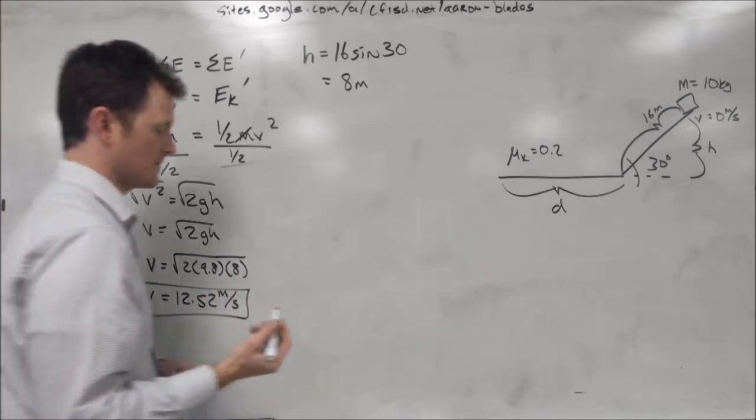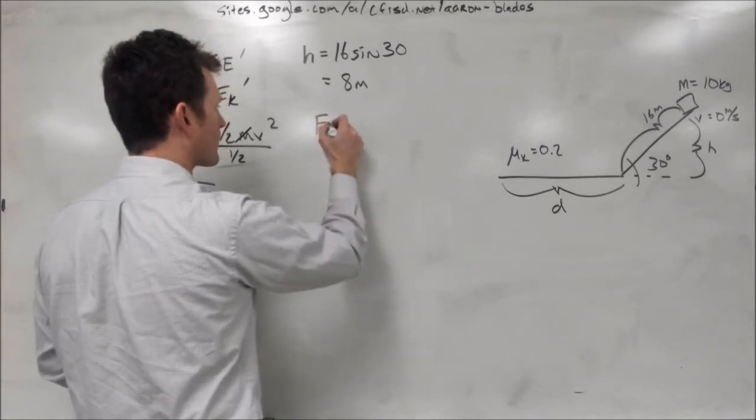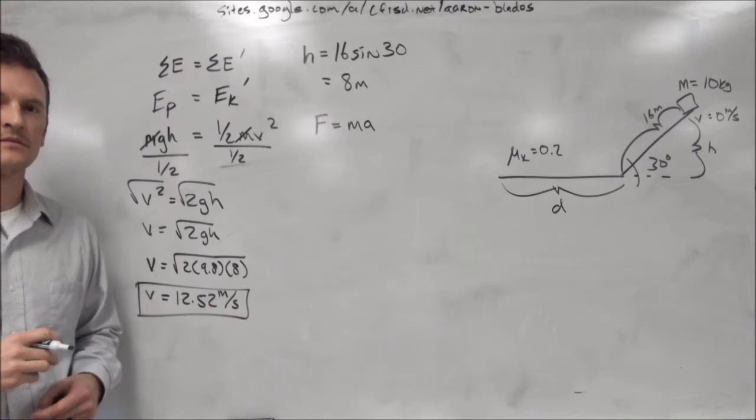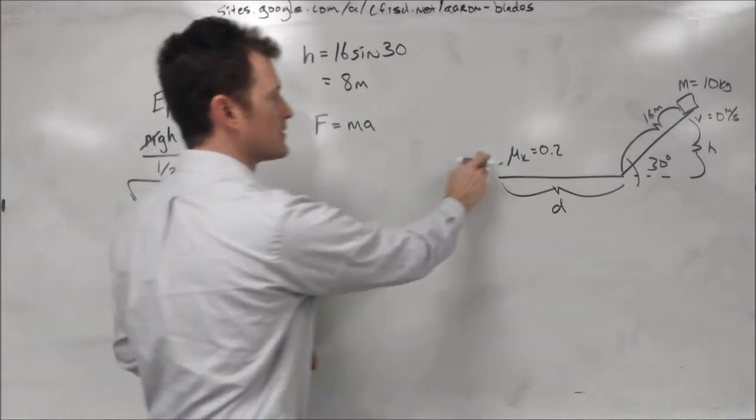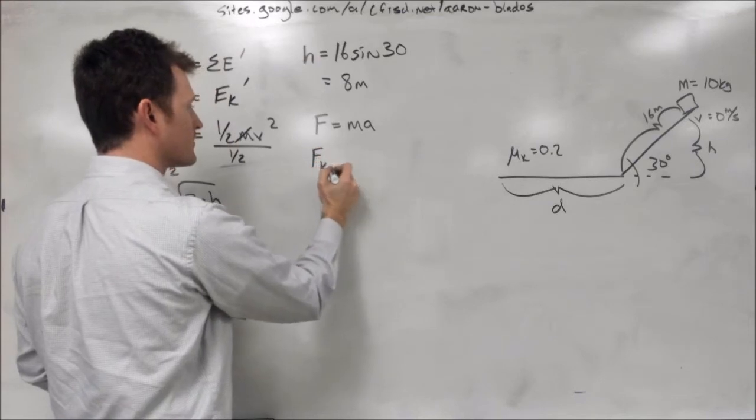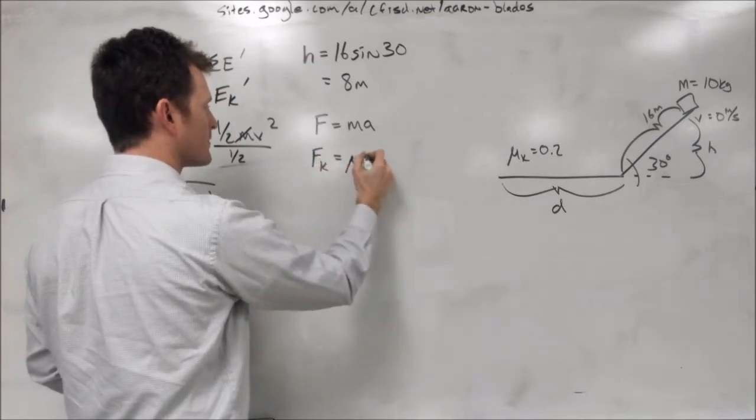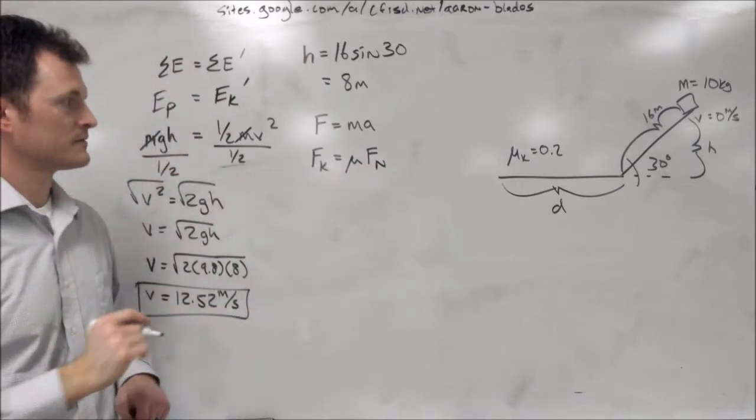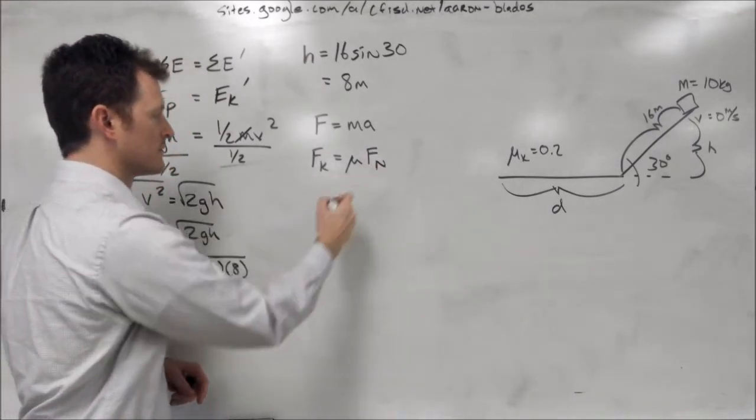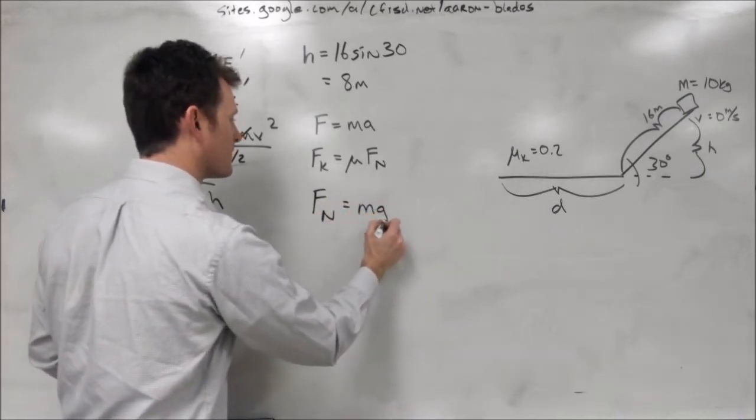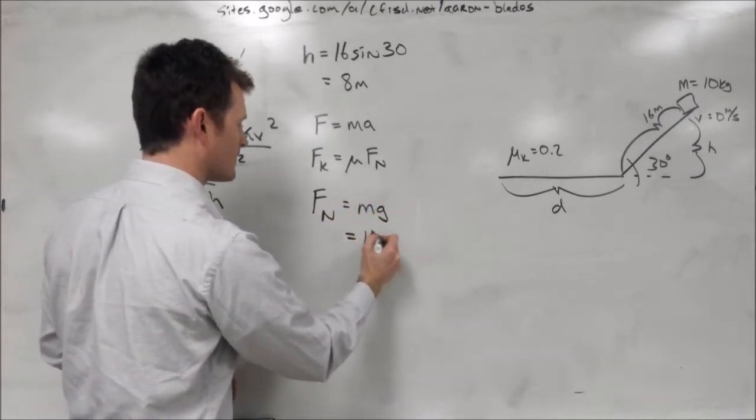Now we need to find out our acceleration, so we can find out our distance, and we are going to use our force equation. Force equals ma. Now the only force that we have in our problem is the force of friction between the horizontal surface and the box. We remember our friction equation is mu times the normal force. Now again, we are going to have to calculate our normal force, which in this case is just the mass of the box times the acceleration due to gravity,